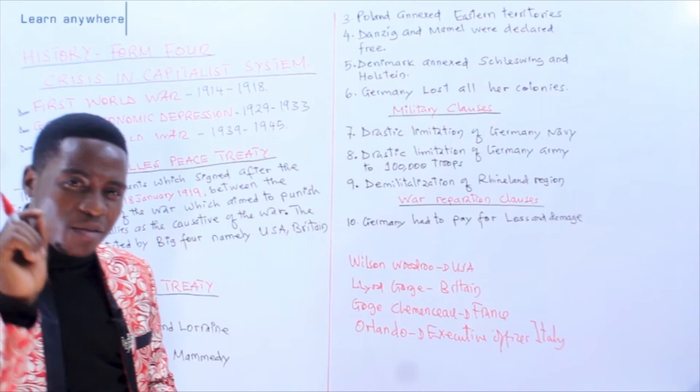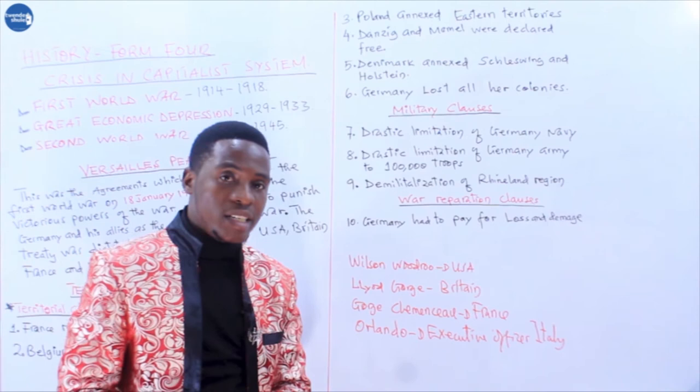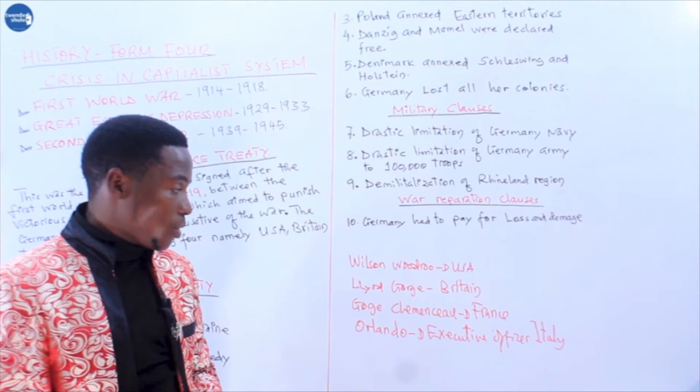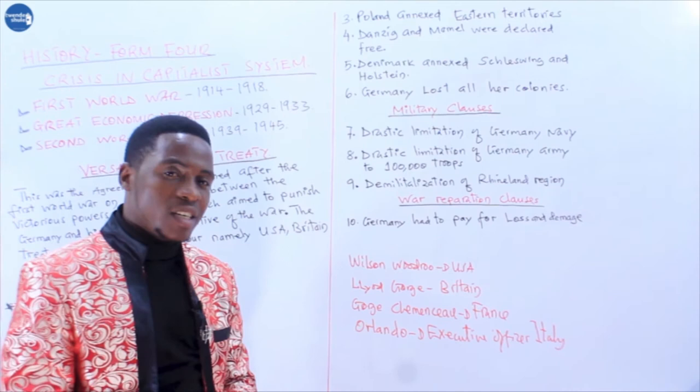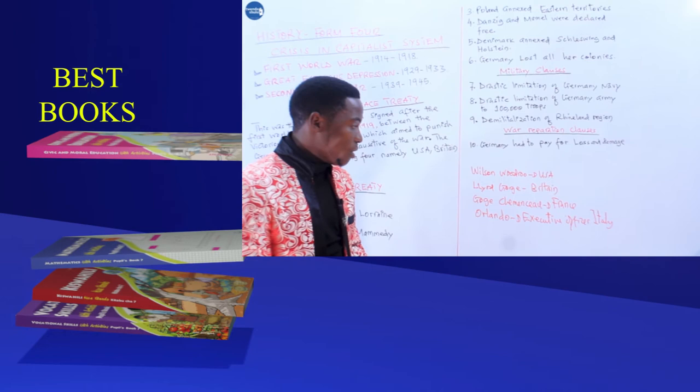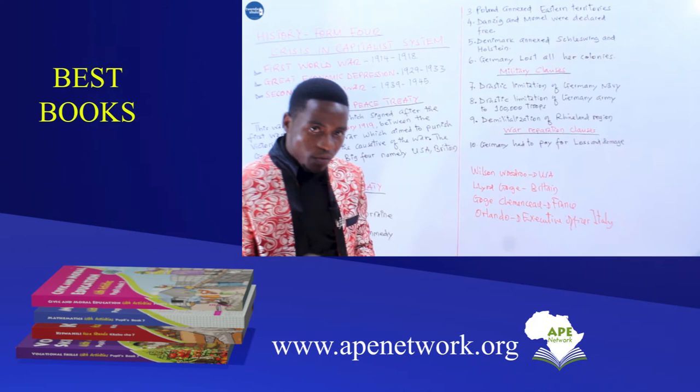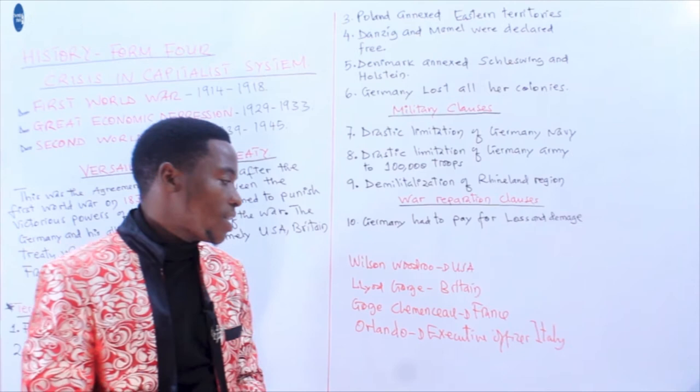George Clemenceau of France wanted to punish Germany so that Germany would never invade France again. Remember, during the Franco-Prussian War of 1870–1871, Germany annexed two provinces from France, which were Alsace and Lorraine. That annexation triggered the hostility between France and Germany. So Clemenceau proposed that Germany, as the instigator of the war, must be punished to the extent that it would never become powerful enough to invade France again.